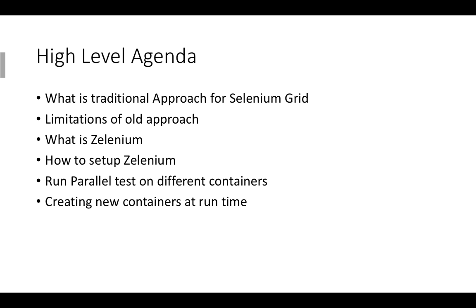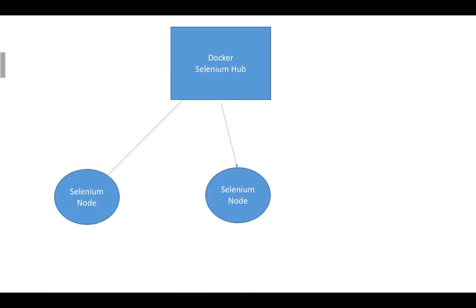Please watch the video till the end because we will be discussing everything in detail. In previous Docker Selenium videos, we did a setup where we created a Selenium Hub and connected Selenium nodes — different containers — to it. Whenever you need to run more tests or need a new node, you have to manually attach that node to the Selenium Hub again. You need to run the command each time and it will attach the node to the hub. With three nodes, that's manageable, but what if you need five or ten more nodes?